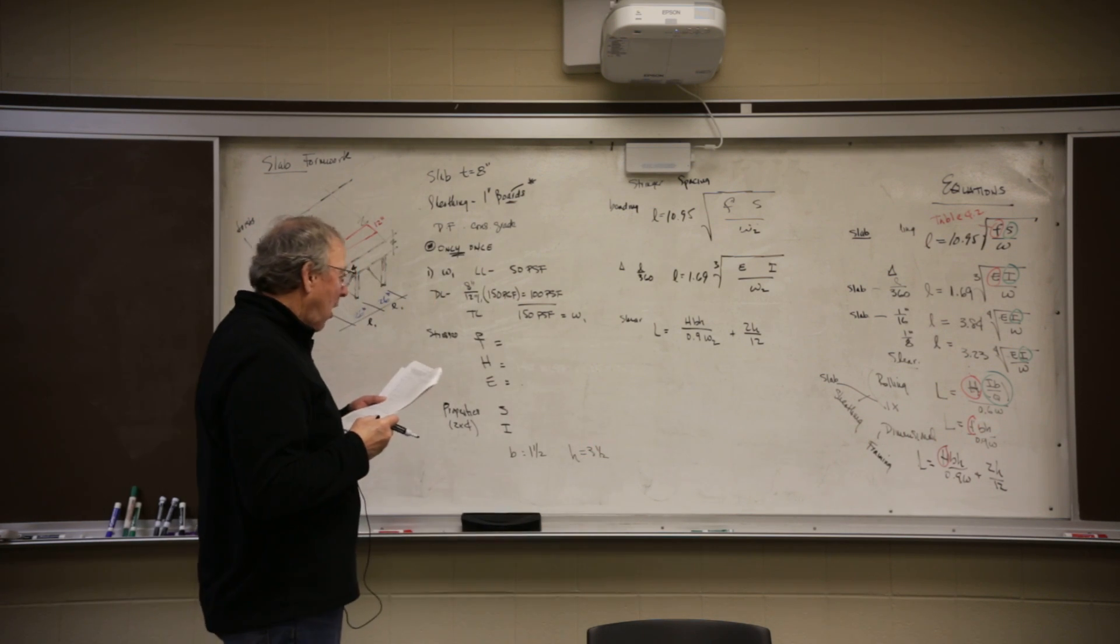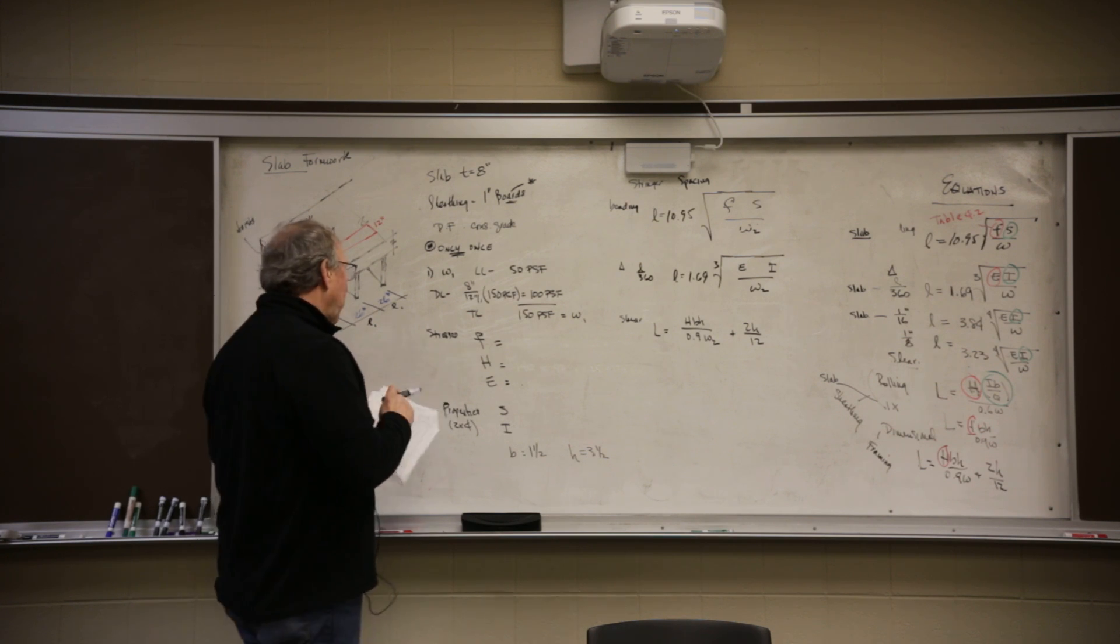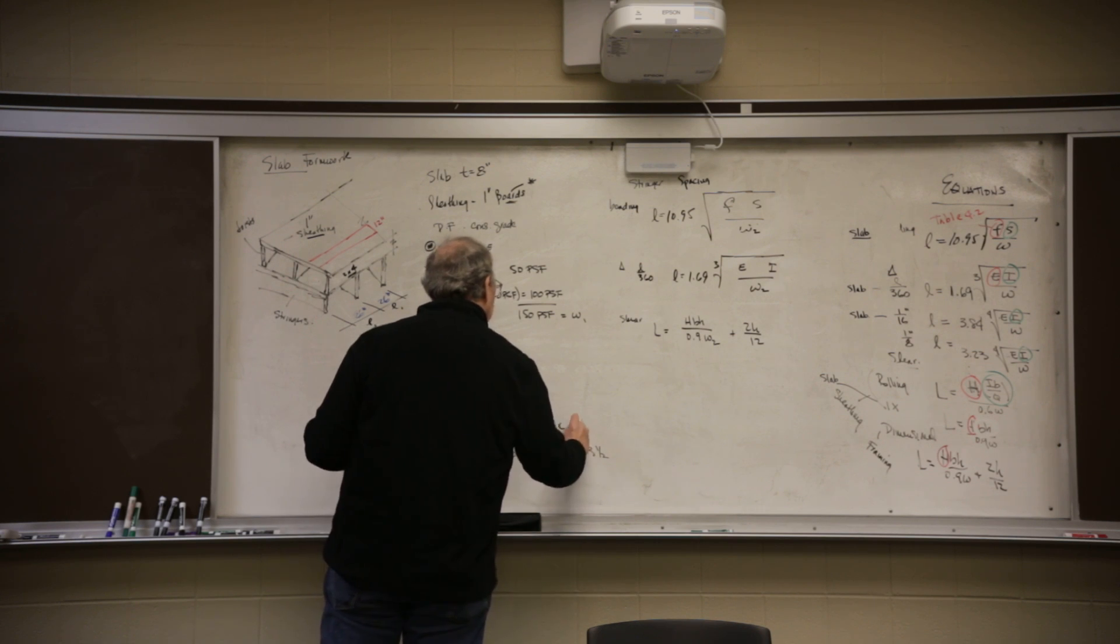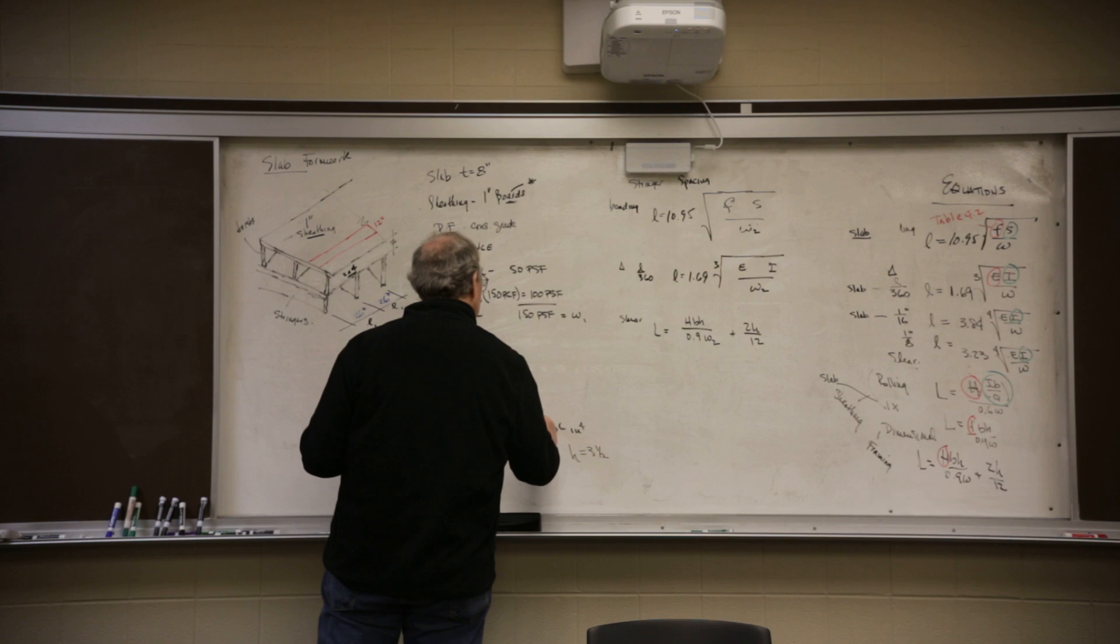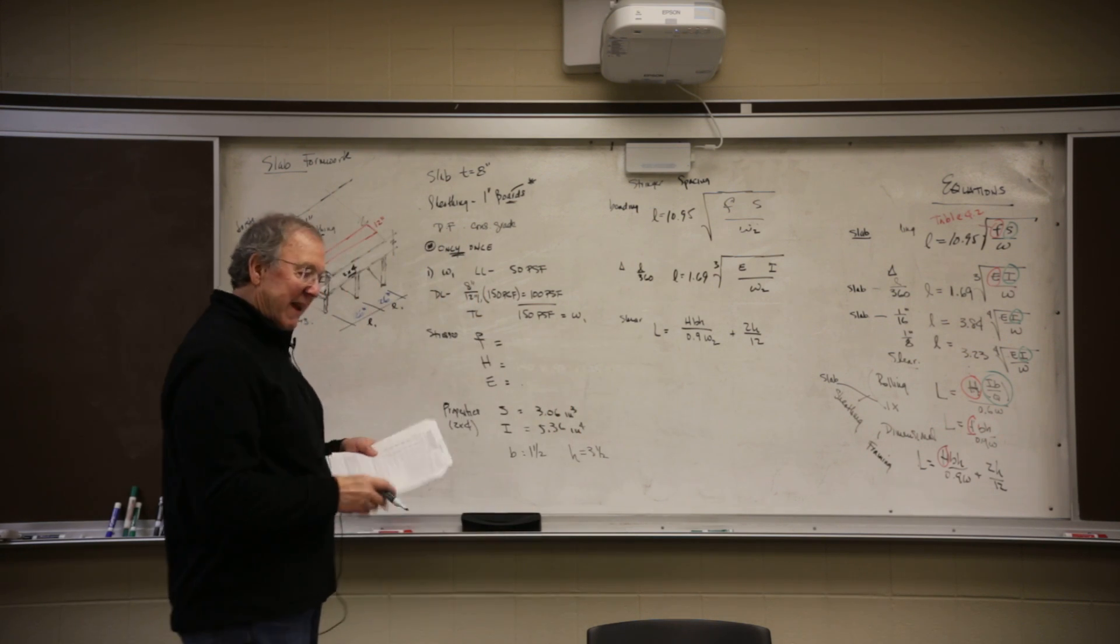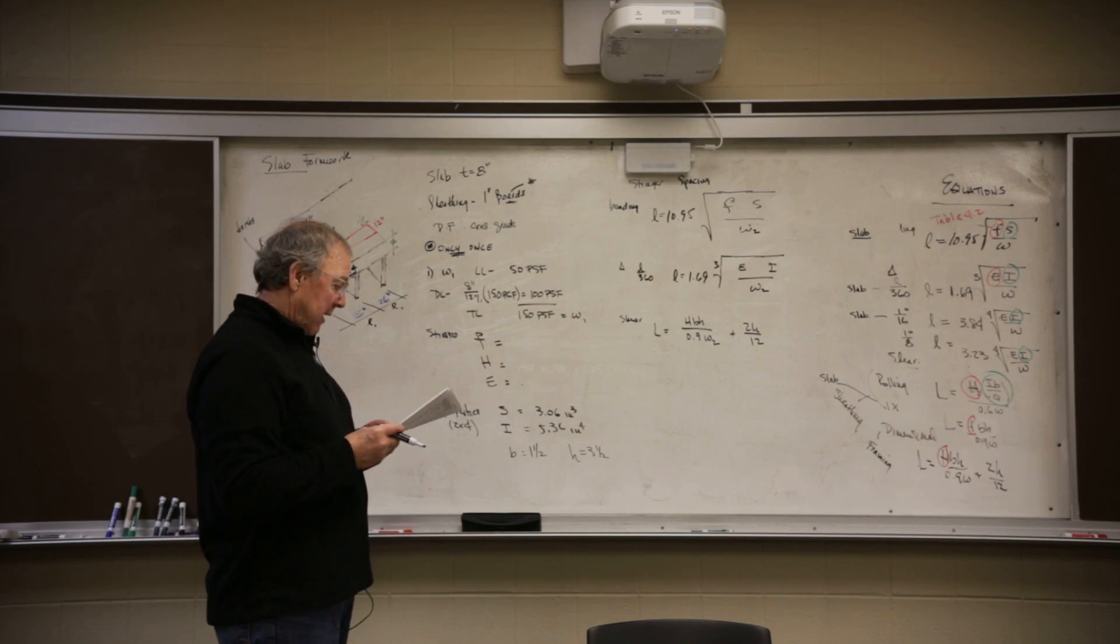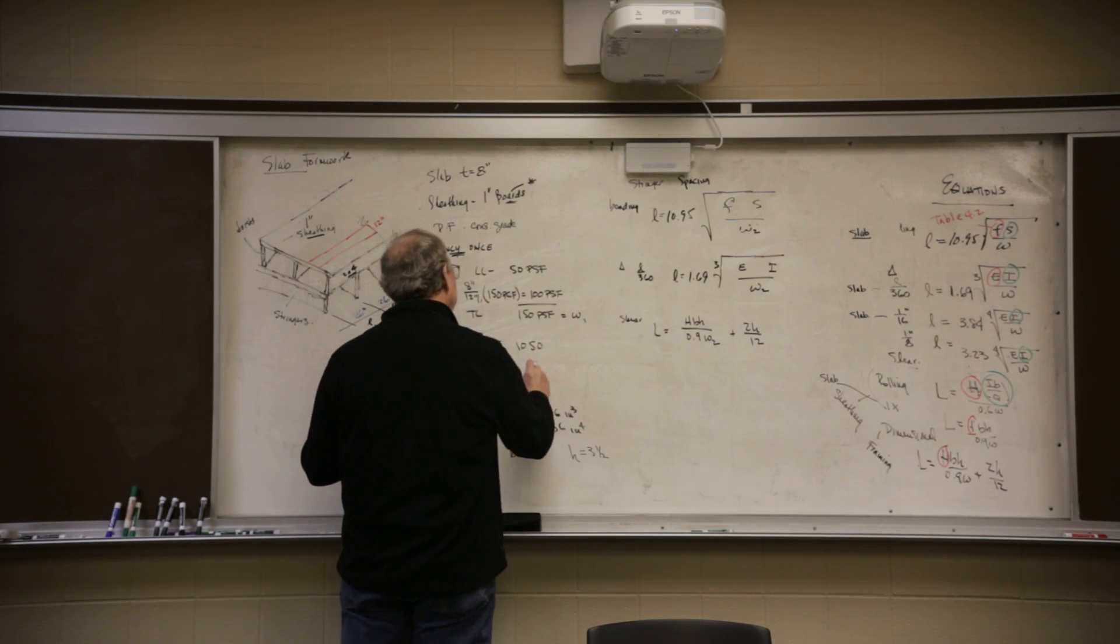It says a two by four is an inch and a half by three and a half. If you move across, the moment of inertia is 5.36. If you keep going across, it says the section modulus is 3.06. Okay, it says it's made out of douglas fir larch, construction grade. This is 1,050, this is 140 and this is a million five.